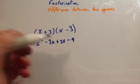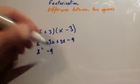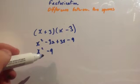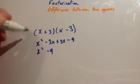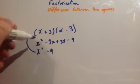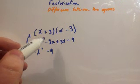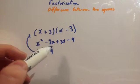Now -3x plus 3x adds together to give you 0, so you're going to get x² - 9. Remember factorization is the opposite of expanding, so we've expanded here. If I went from here to here, I factorized it.